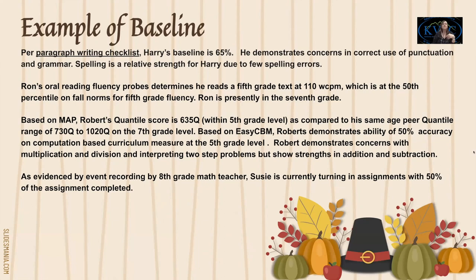Here are some examples of baseline data. For the math one: Robert is a seventh grade student working on a fifth grade level. Based on EZCBM, he is at 50% accuracy on computational-based curriculum measures at the fifth grade level. He demonstrates concerns in multiplication, division, and interpreting two-step problems, but shows strength in addition and subtraction. Based on several probes, he's consistently at 50%, so this leads to a goal around interpreting two-step problems or multiplication and division.